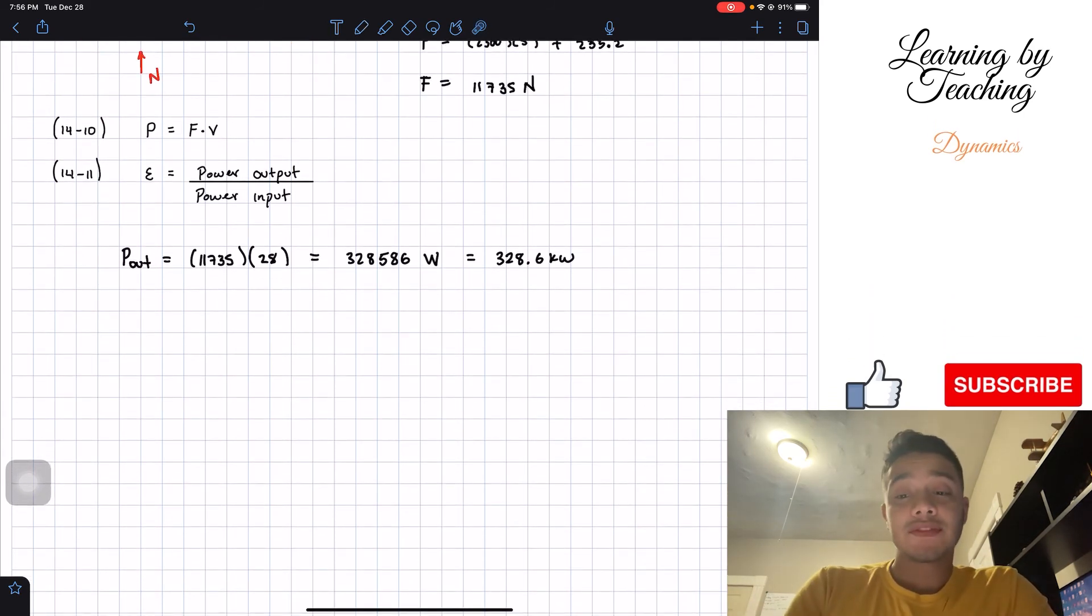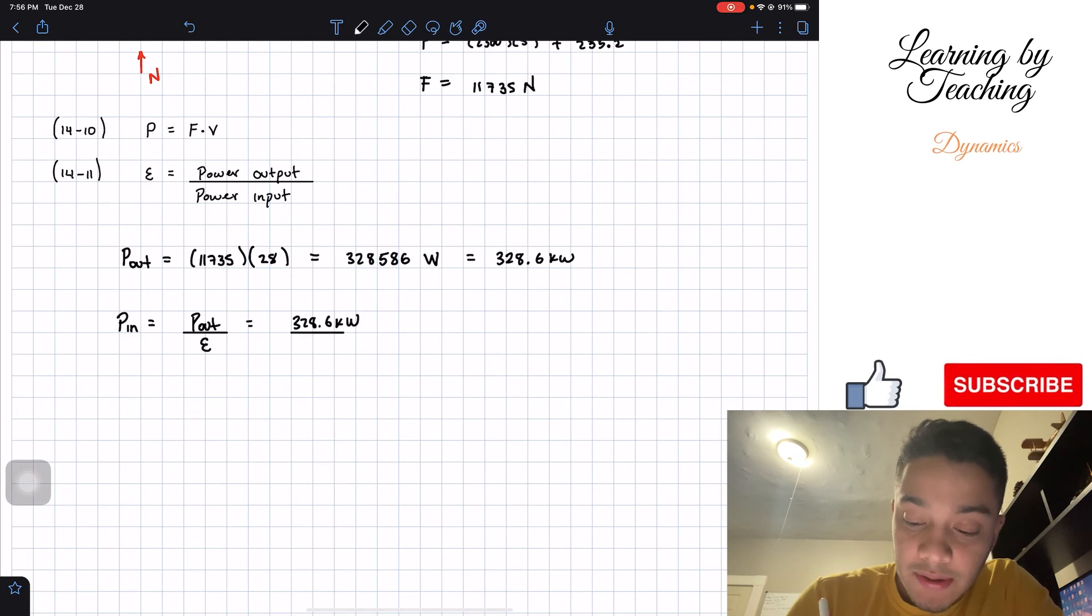Now the problem is asking for the power input, the power supply to this engine. So we're going to take this equation and solve for power input. Power input is going to be my power output divided by my efficiency. So 328.6 kilowatts divided by 0.68, which gives me a total of 483.2 kilowatts. So this is our final answer.